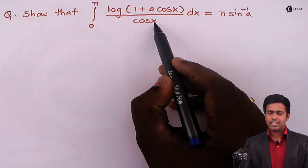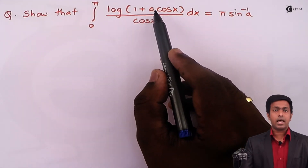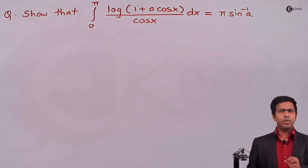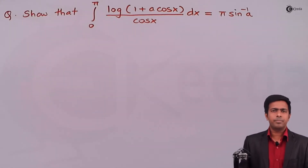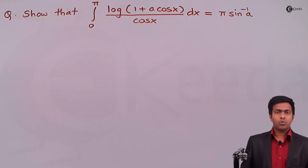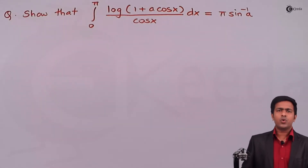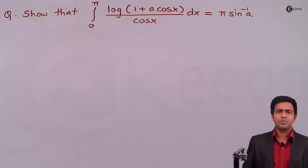In this question, x is the variable and a is the parameter, and hence we'll be applying the differentiation under integral sign rule to solve this problem. The question is how to start, and for that I'm going to show you the five-step method. By applying these five steps, you can get the value of the integral easily.